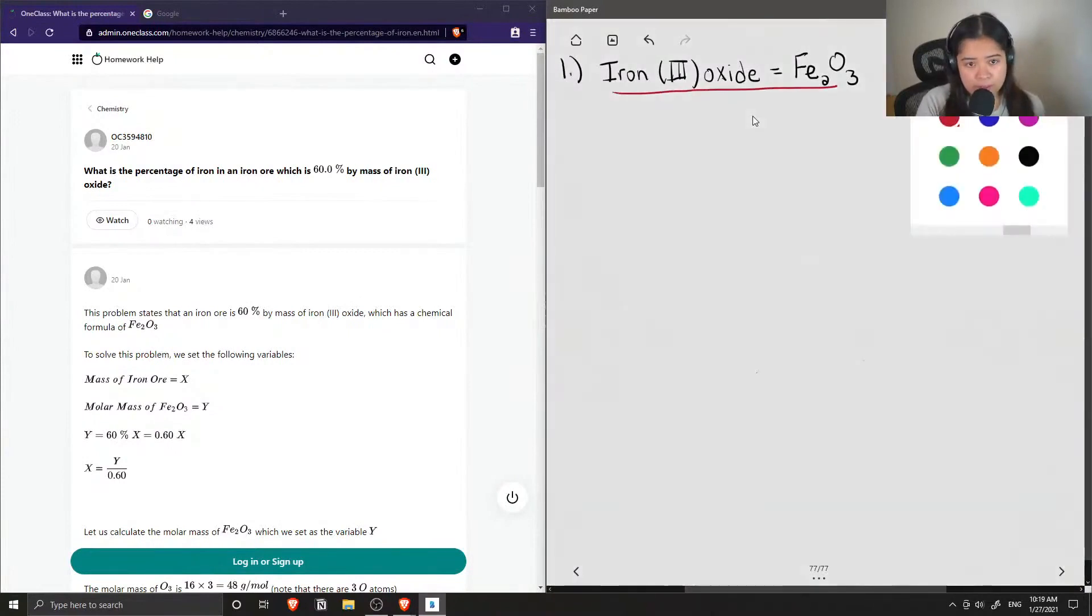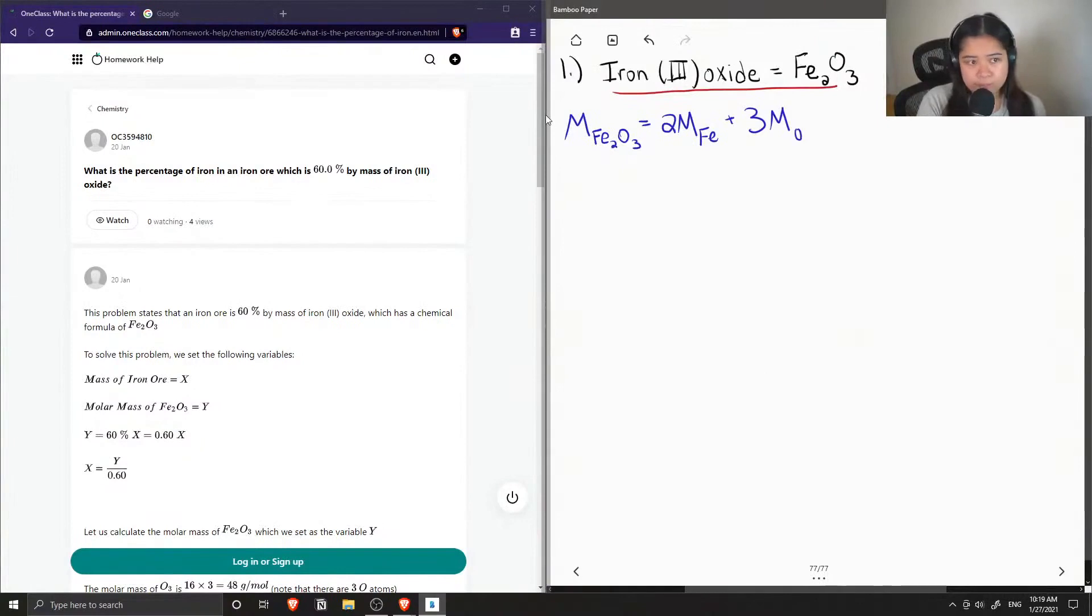Okay, so now that we know the chemical formula of iron oxide, let's find out its molar mass. So the molar mass of iron oxide will just be 2 times the molar mass of iron plus 3 times the molar mass of oxygen. So these are values you can just find on your periodic table. And the molar mass of iron is 55.8 grams per mole. And the molar mass of oxygen is around 16 grams per mole.